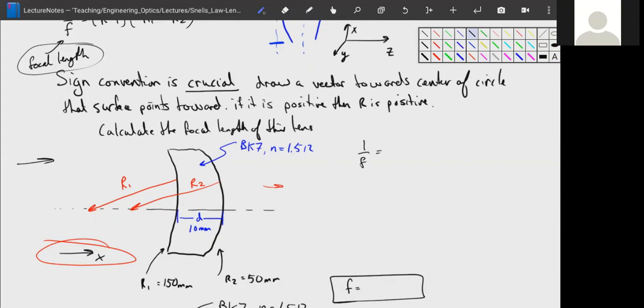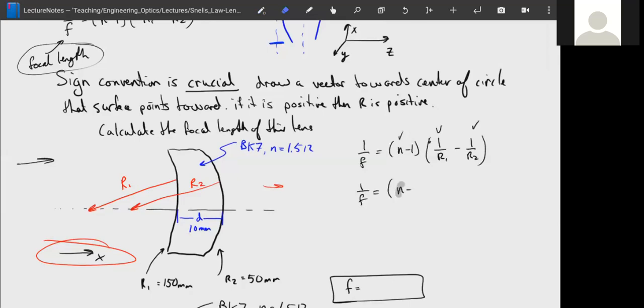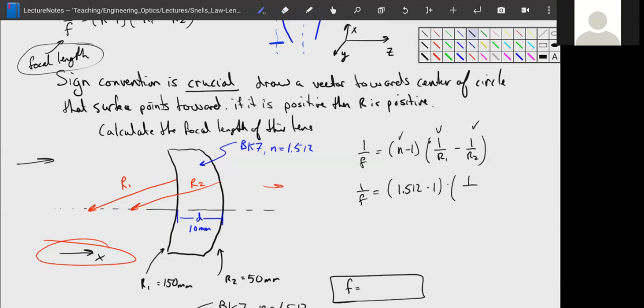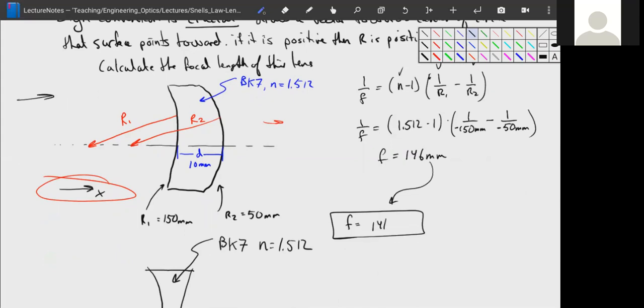Let's plug it in and see what happens. So we have 1/f = (n-1)(1/R₁ - 1/R₂). Let's plug in all the things we know. 1/f = (1.512 - 1) times (1/-150 millimeters minus 1/-50 millimeters). So we plug that into our calculator, invert it, and we get that our focal length is equal to 146 millimeters.